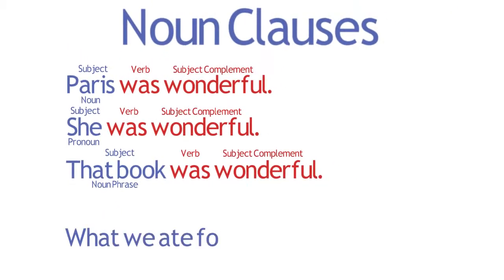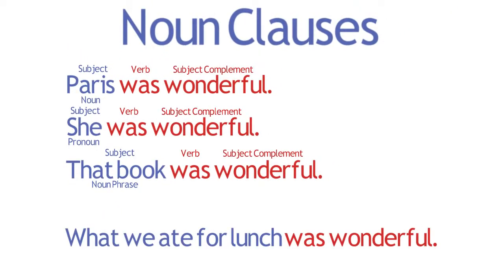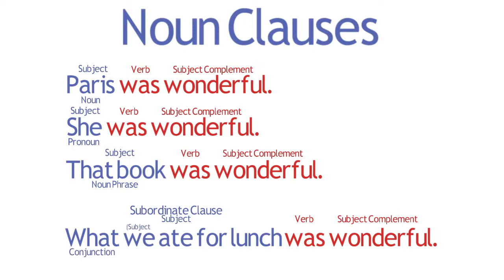Now consider this sentence. Here, as in the first three sentences, the verb is 'was,' and the subject complement is the predicate adjective 'wonderful.' In this sentence, however, the subject is the subordinate clause 'What We Ate for Lunch.' This clause begins with the subordinating conjunction 'what,' and has its own subject and verb, making this sentence a complex sentence.